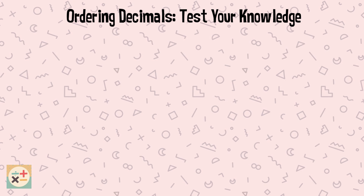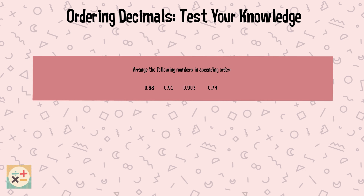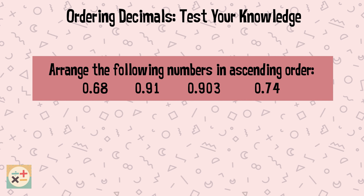Question 3. Arrange the following numbers in ascending order: 0.68, 0.91, 0.903, and 0.74.